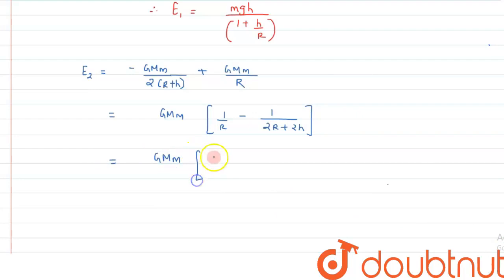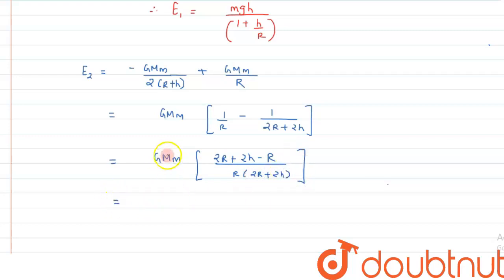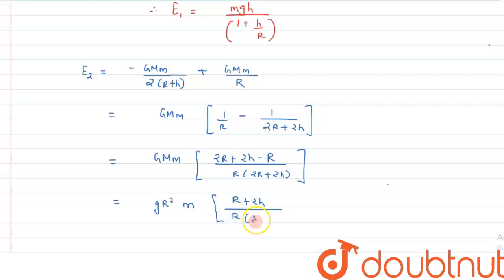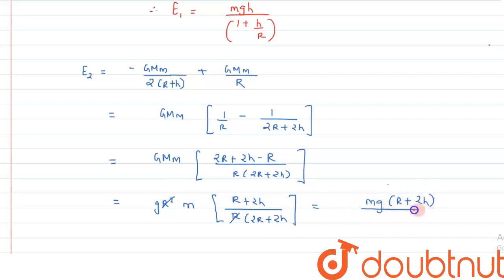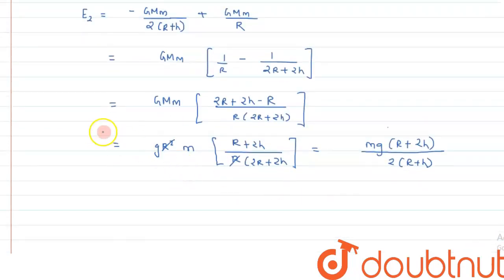On further simplification, E2 = GMm · [2R+2h−R] / [R · 2(R+h)] = GMm · (R+2h) / [2R(R+h)]. Substituting GM = gR², we get E2 = gR²·m·(R+2h) / [2R(R+h)]. One factor of R cancels, leaving E2 = mg·R·(R+2h) / [2(R+h)].